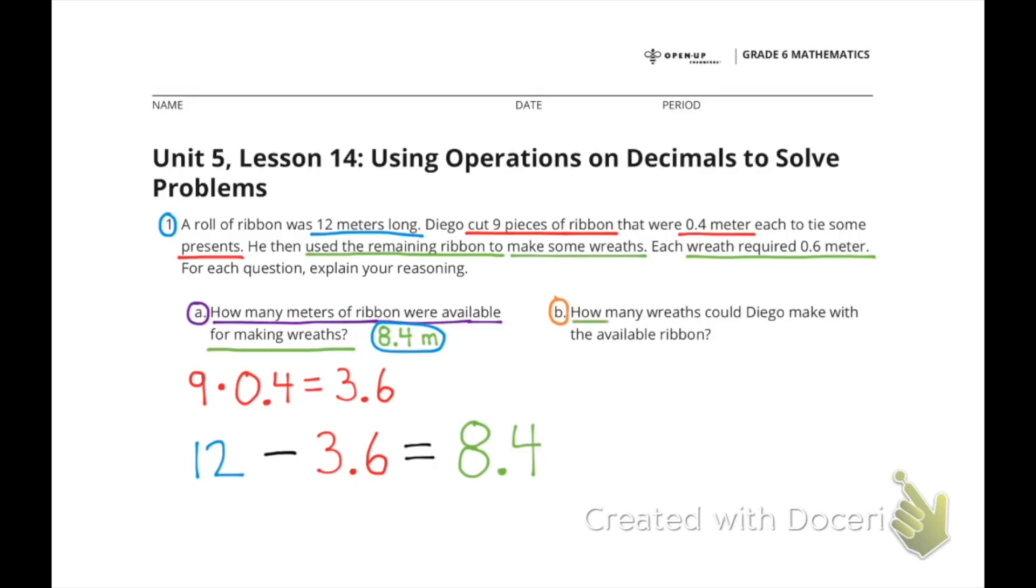B: How many wreaths could Diego make with the available ribbon? 8.4 divided by 0.6 is the same as 84 divided by 6, which is 14. Diego was able to make 14 wreaths with the available ribbon.